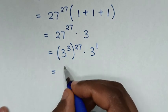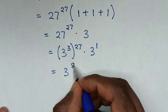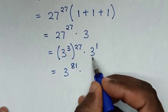Then in the next step, it will be equal to 3 to the power of 3 times 27, which is to the power of 81, then times 3 to the power of 1.